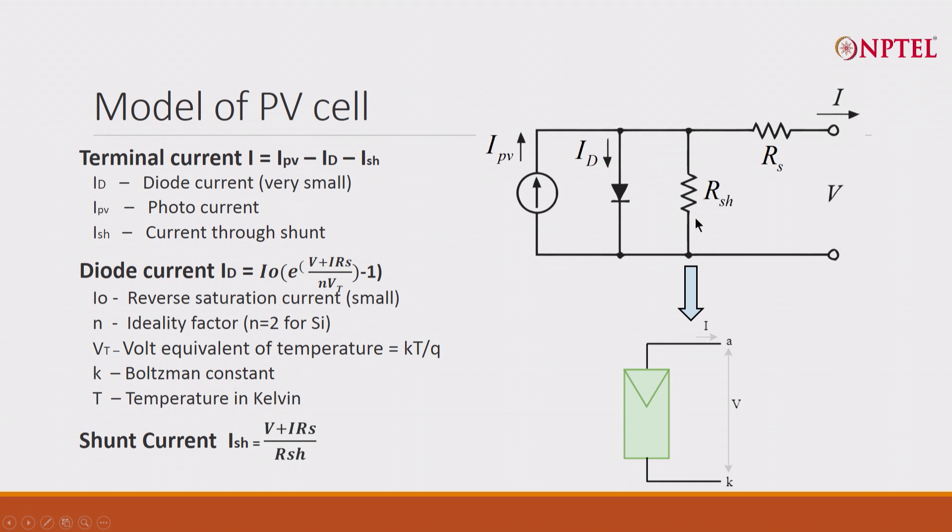And the current that will flow, if there is a voltage here, current that will flow in the shunt. Diode current is given by I0 into e^(V+IRS)/(nVT) minus 1. This is the standard diode equation.